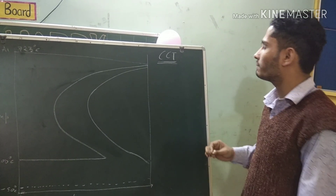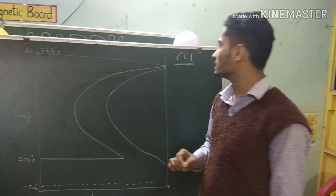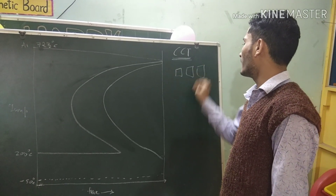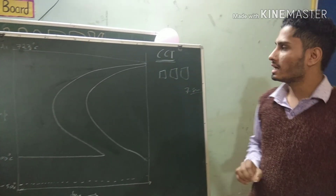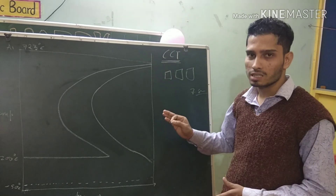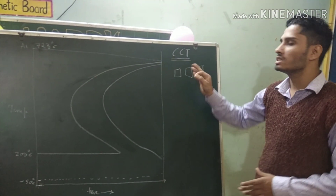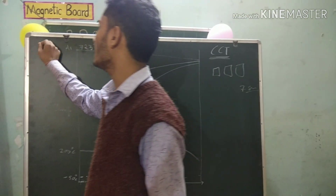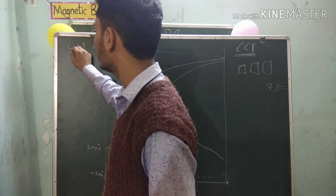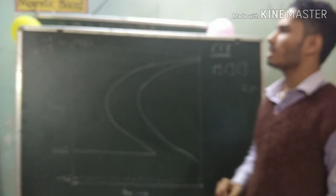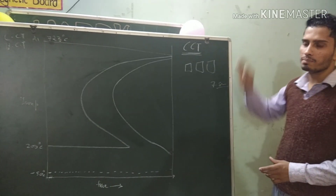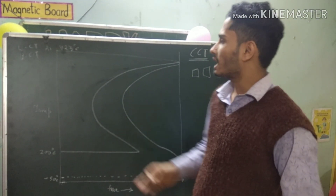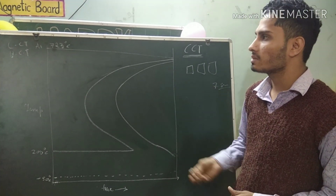In the CCT curve, we take samples of eutectoid steel — samples 1, 2, 3 and up to seven samples. After taking seven samples, we heat all seven samples above 723°C, because it is a eutectoid steel. We then cool the steel by several rates and get different micro-constituents of steel.